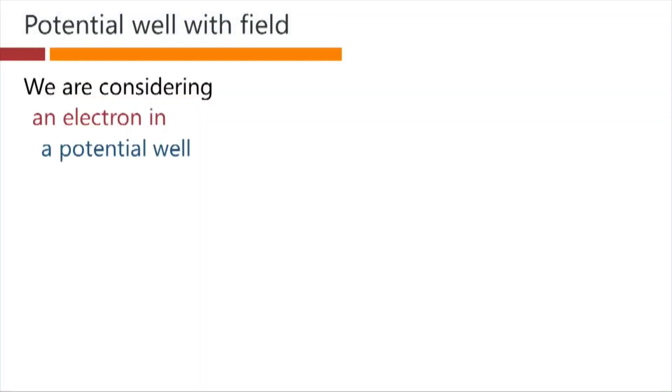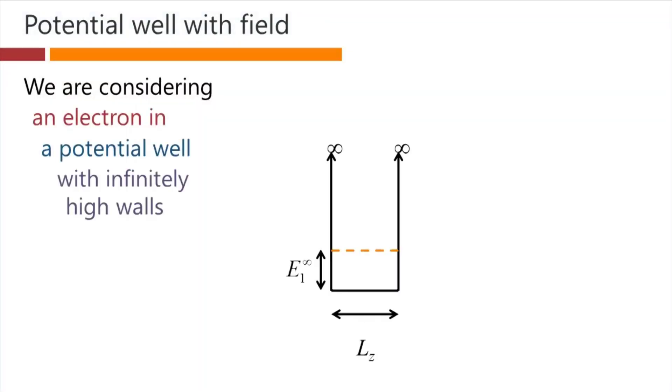Before trying out our various methods, we need to set up this particular problem in a convenient form. We're going to consider an electron in a potential well with infinitely high walls as usual. It will have a thickness Lz, and the usual notation we have for the energy of the first confined state in that well would be E1 infinity, the infinity indicating we've got infinitely high walls as usual.